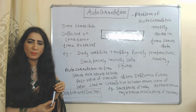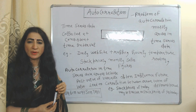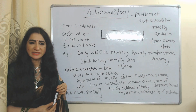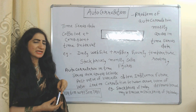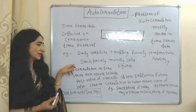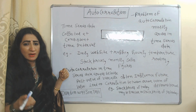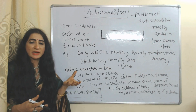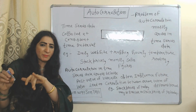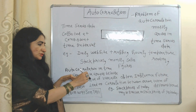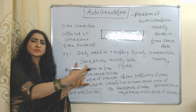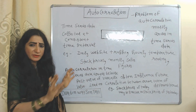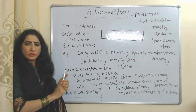Where does the autocorrelation problem mostly arise? It mostly arises in the case of time series data, which is collected at consistent time intervals — for example, daily website traffic, hourly temperature readings, stock prices, and monthly sales figures. The reason is that the value of a future variable is influenced by the value of a past variable. For example, the stock price today may be similar to the stock price yesterday, which creates correlation between error terms of different periods and leads to the problem of autocorrelation.